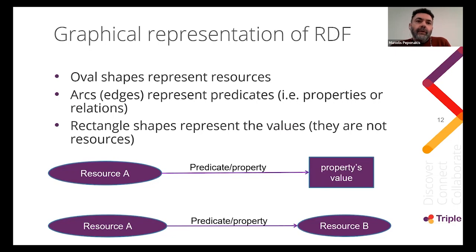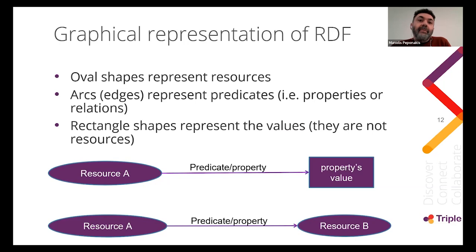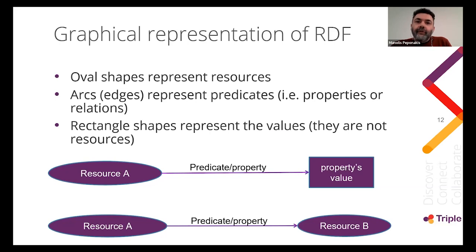Let's look at the structural components of semantic graphs. Oval shapes represent resources. Arcs — meaning edges — represent predicates, which means properties or relations, the verb in natural language. Rectangle shapes represent values. It is important to note that values are not resources — they are text, numbers, or dates, but not resources.